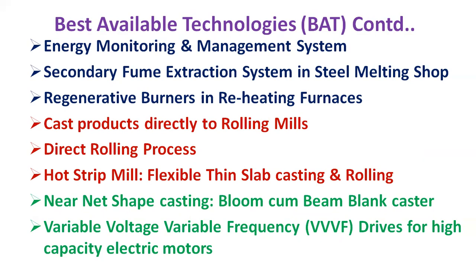All these measures have resulted in considerable reduction in specific CO₂ emissions in integrated steel plants. Specific CO₂ emission has reduced from around 3.1 tons per ton of crude steel in 2005 to around 2.5 tons per ton of crude steel in 2020. The reduction from 2.65 tons in 2015 to 2.5 tons in 2020 is very significant. With adoption of these initiatives, the Indian steel industry has already achieved the 2020 target and is well placed for achieving the 2030 targets aligned with the UN Sustainable Development Goals.